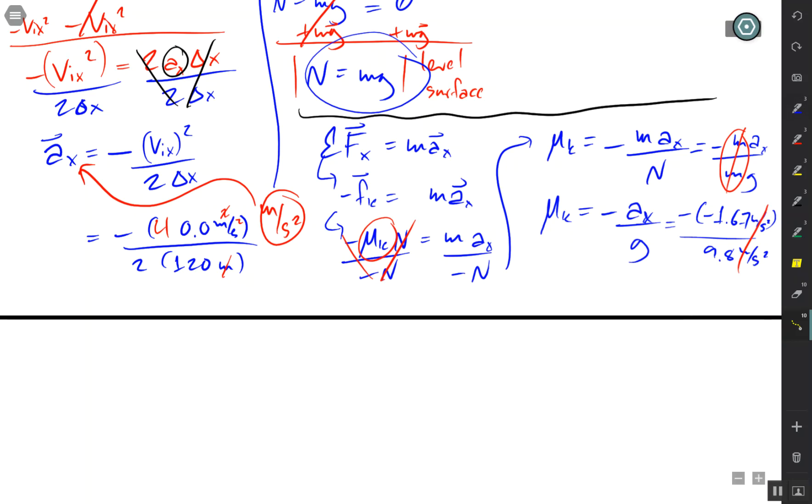And we're going to get a value less than one. Coefficients of friction are often not less than one. And since this is ice, we expect something not that big. And sure enough, there we go. Take a look at that.